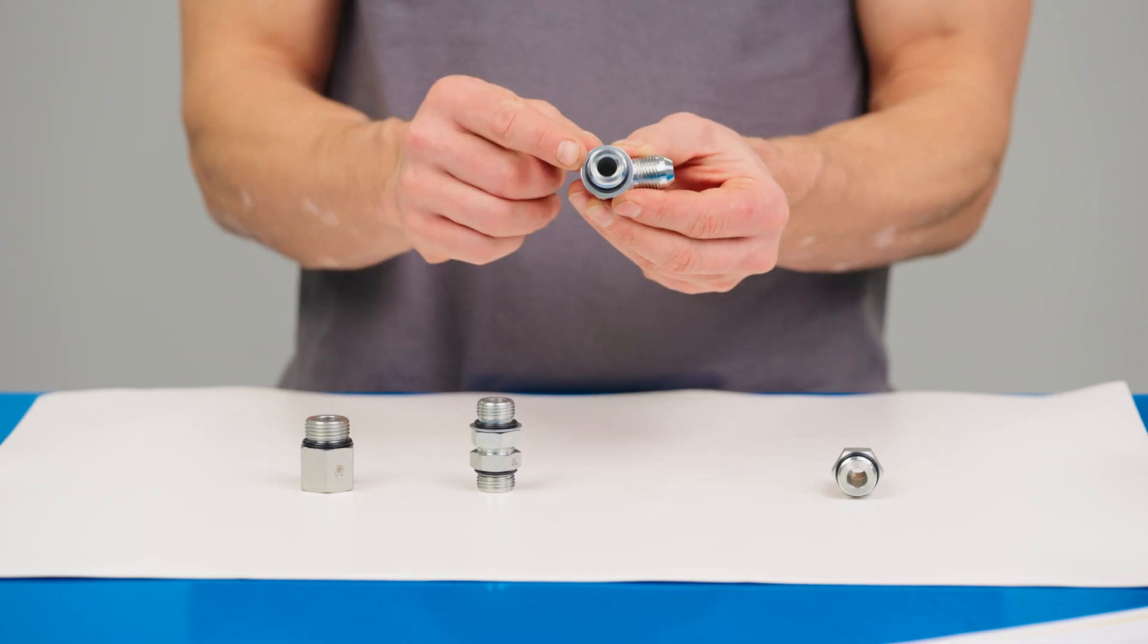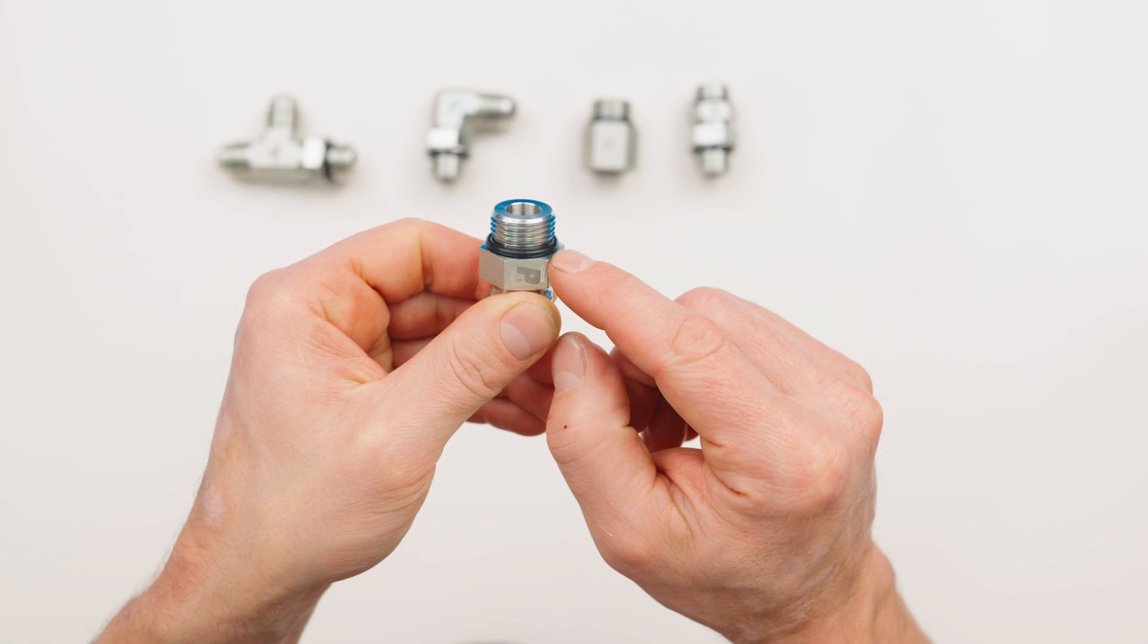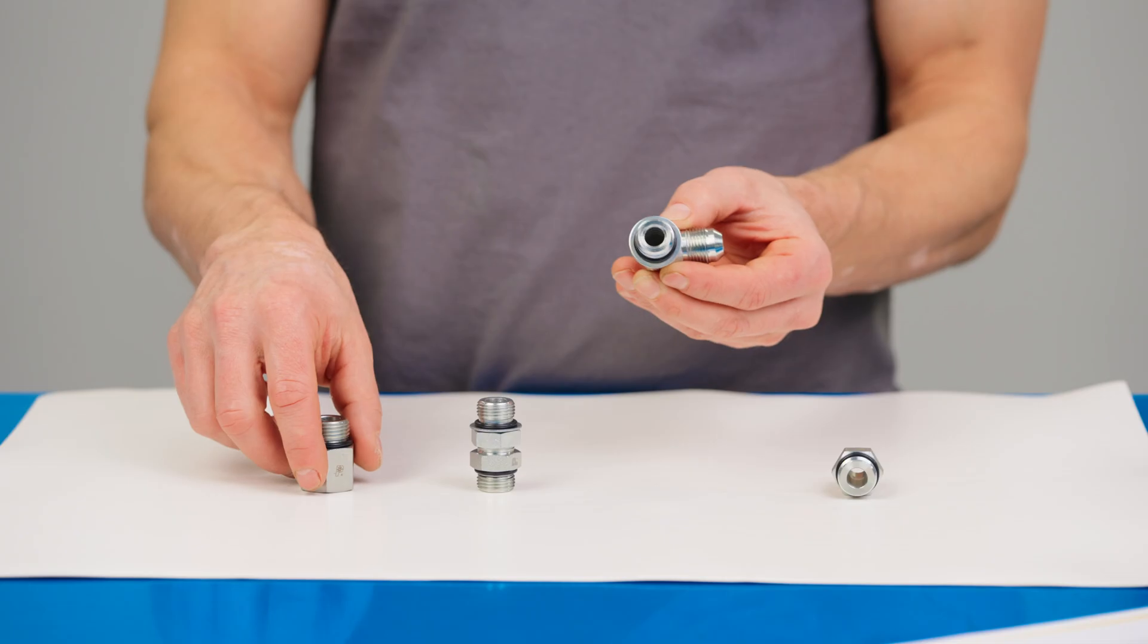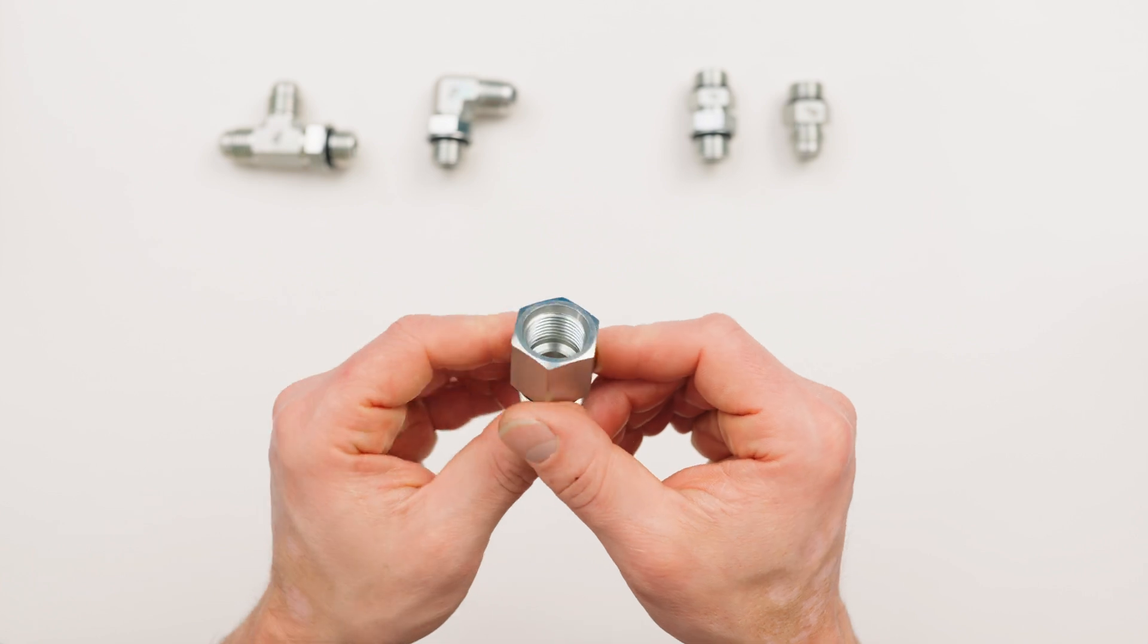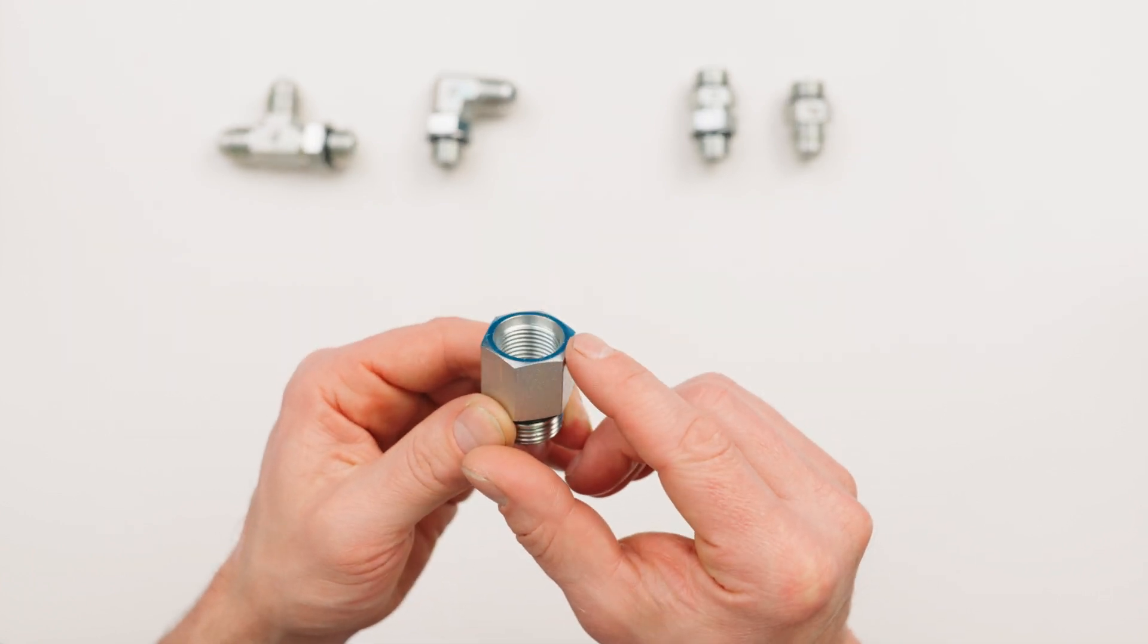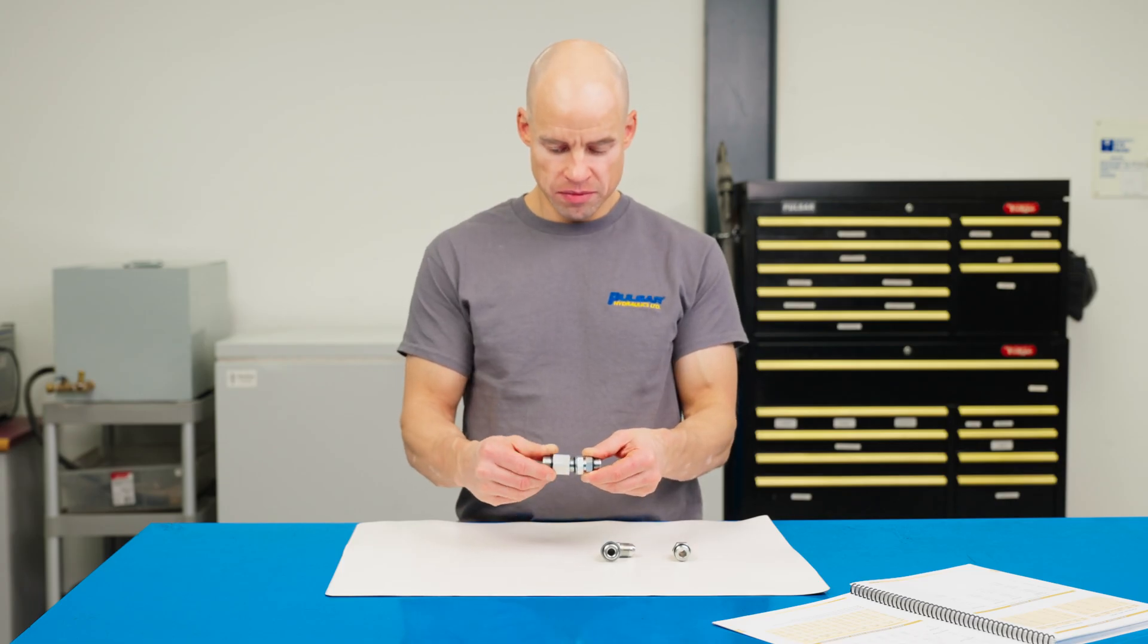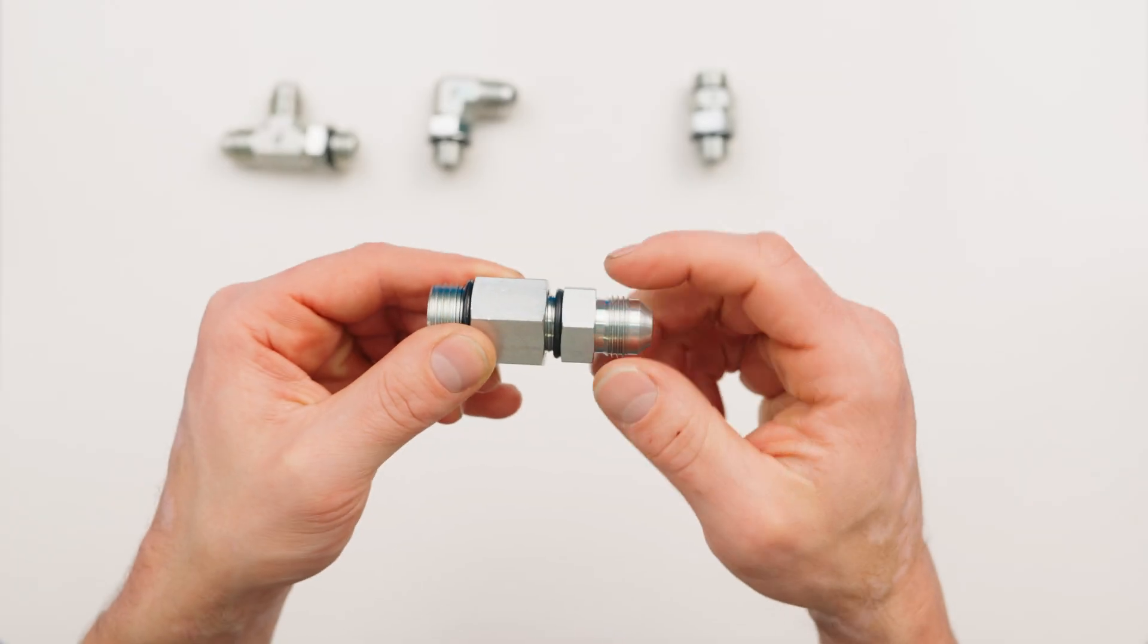The straight male thread on an ORB fitting has an O-Ring at its base. The female thread is also straight and comes complete with a chamfer where the O-Ring seats. A seal is created when the O-Ring is compressed upon threading the male and female fittings together.